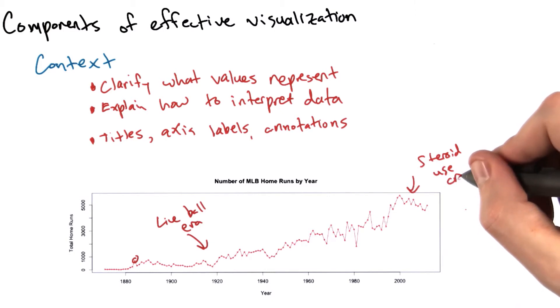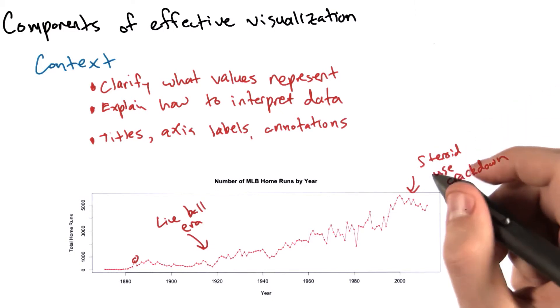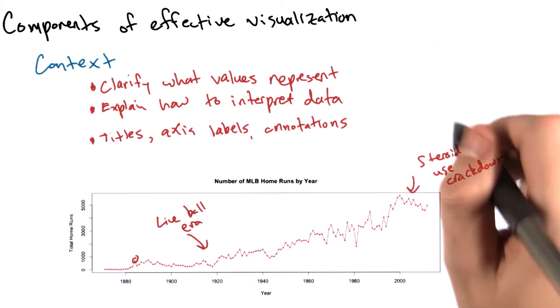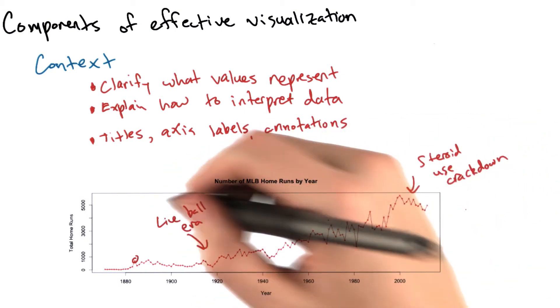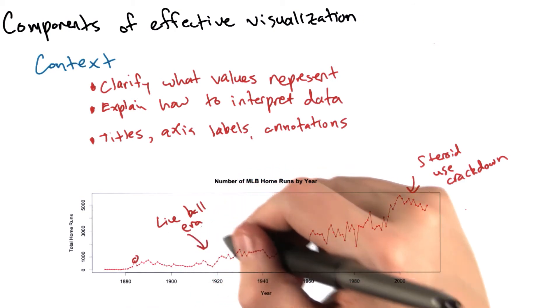The crackdown on steroid use, which happened somewhere around the year 2000, etc. These annotations might help people interpret this data and understand the story of why the number of home runs hit by year is changing over time.